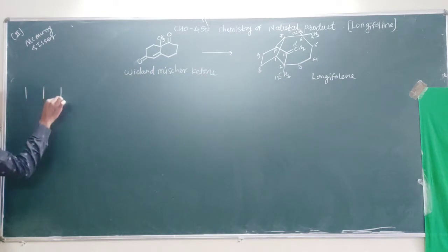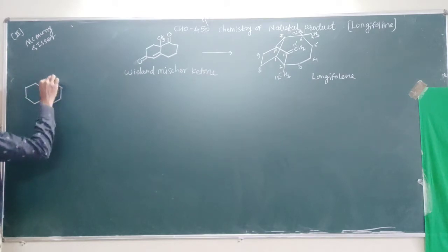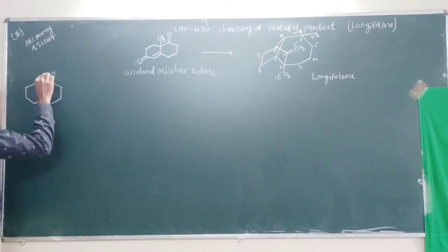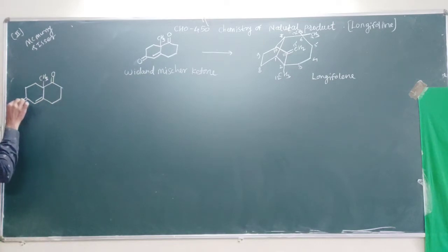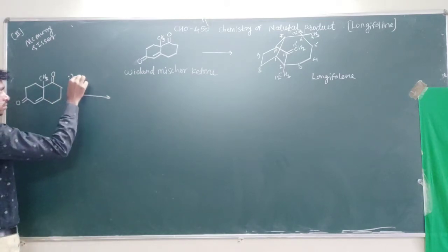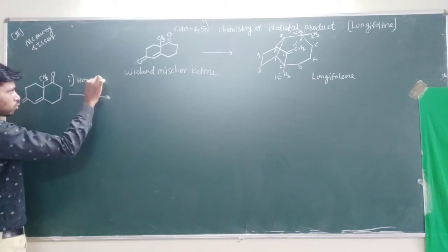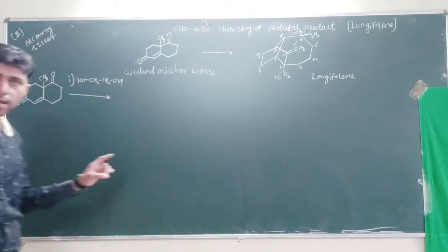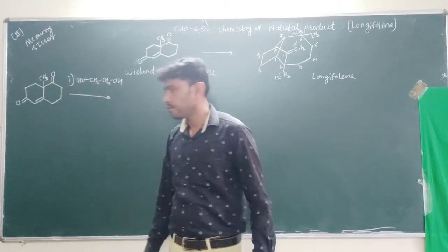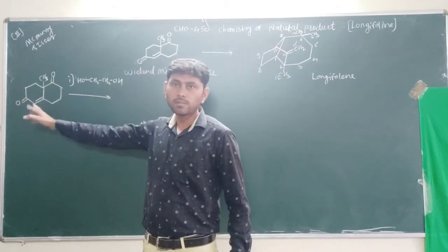We start with Willen-Michel ketone. In the first step, a diol (glycol, HOCH2CH2OH) is used. The purpose of using this glycol is to protect the carbonyl group that is not conjugated. The conjugated carbonyl group remains unprotected, while the other carbonyl group is protected.